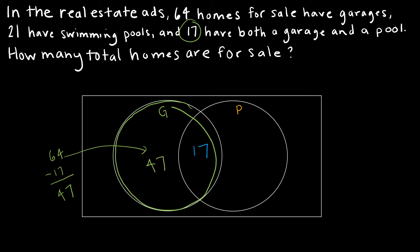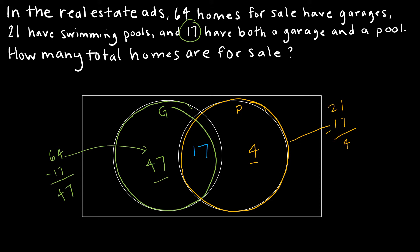The other circle includes 21 total homes, and that includes the 17 that I had before. So I have to do 21 minus 17 to get 4. There are actually only 4 homes that have a pool but no garage, 47 homes that have a garage but no pool, and 17 homes that have both. Now I can just add these values together: 47 plus 17 plus 4 gives a total of 68 homes.